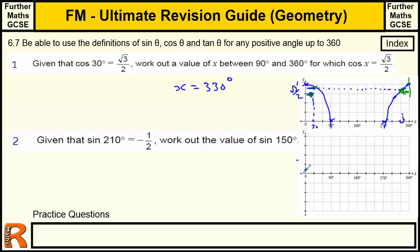So start by drawing a sine curve. Starts at 0, goes up to 90, back down to 180, down to 270, back up to 0 at 360. And it's the same shape as the cos graph, just moved across slightly. So it looks like that.